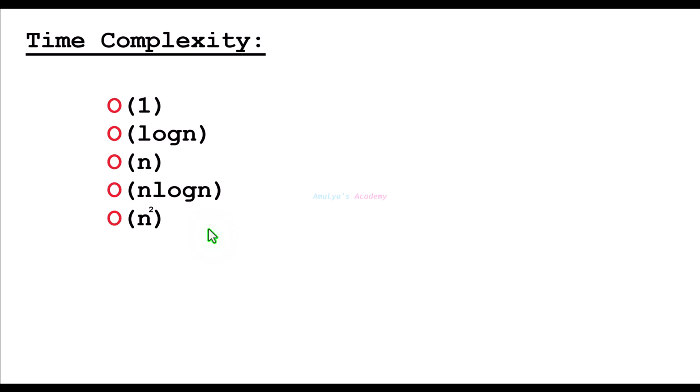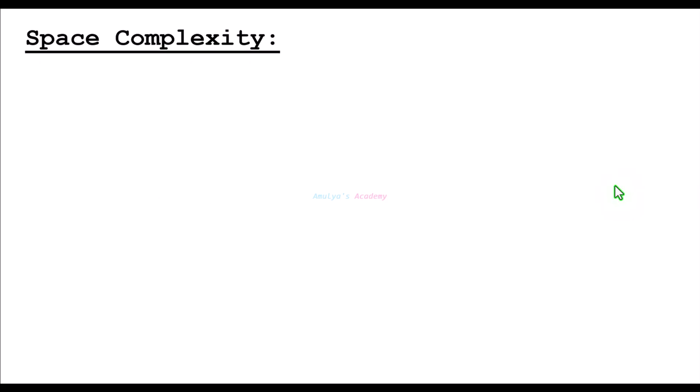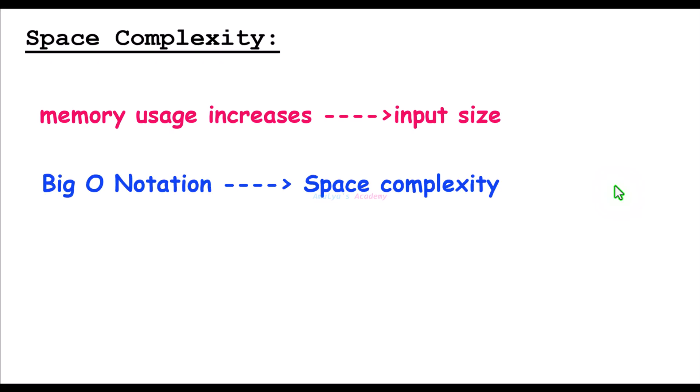Next, let's talk about space complexity. Space complexity is a way to measure how much extra memory an algorithm needs to run depending on the size of the input. Just like time complexity focuses on how run time grows with input size, space complexity focuses on how memory usage grows. Big O notation is used to describe space complexity.